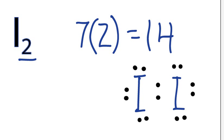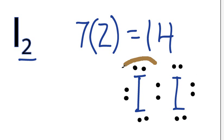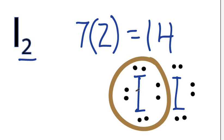And let's see if we have octets. This iodine has 2, 4, 6, 8, and this iodine also has 8.